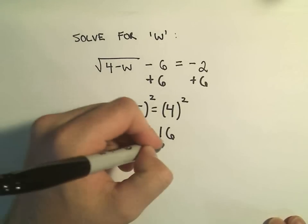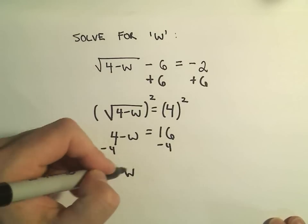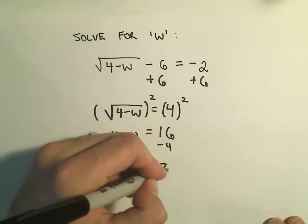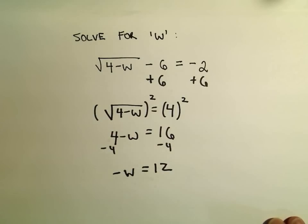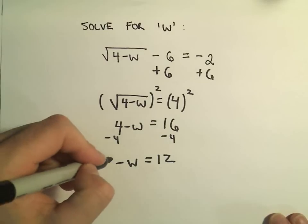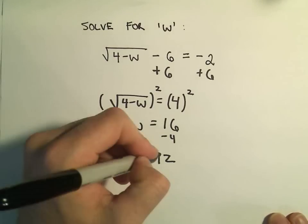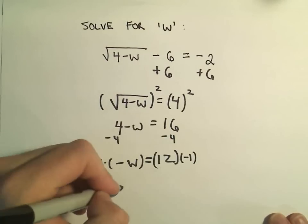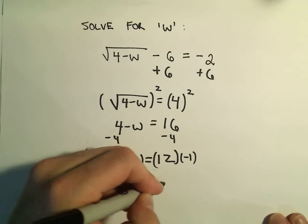Well, I can subtract 4 from each side, and I'll get that negative w equals 12. And then simply, if I multiply both sides by negative 1, we'll get w equals negative 12.